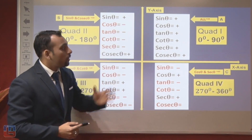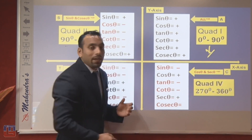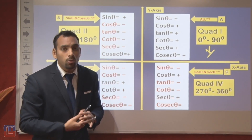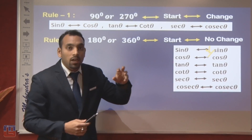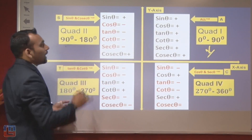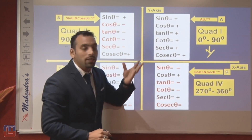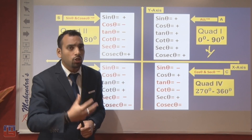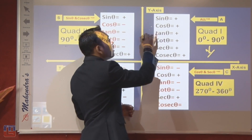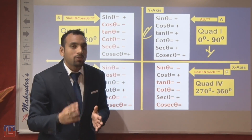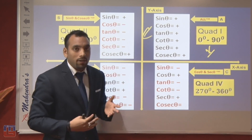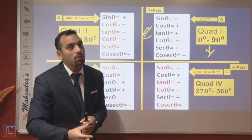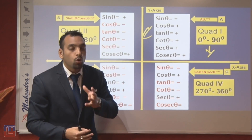We have four quadrants: first, second, third, and fourth. In the first quadrant, angles from 0° to 90° lie. We have six trigonometric ratios — sine θ, cos θ, tan θ, cot θ, sec θ, and cosec θ — and all six trigonometric ratios will be positive in the first quadrant.